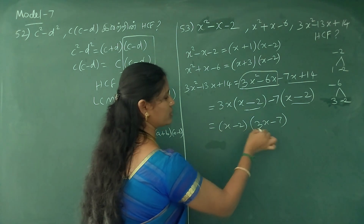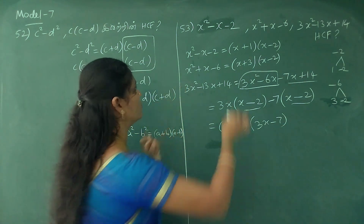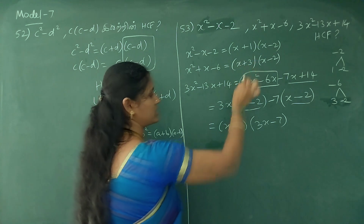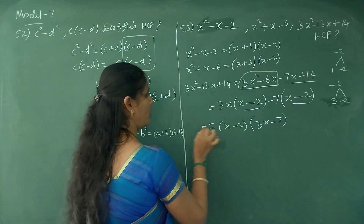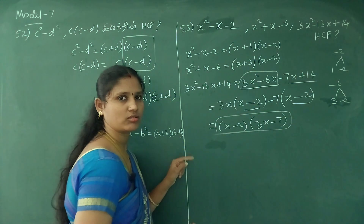So from the first, second, and third equations, the common factor — the HCF — is x minus 2.